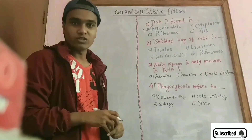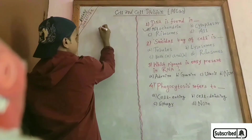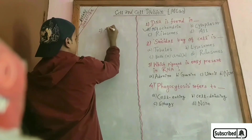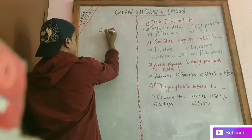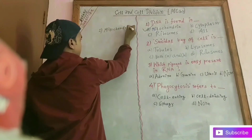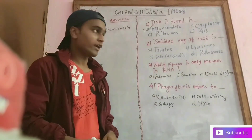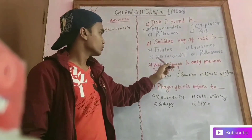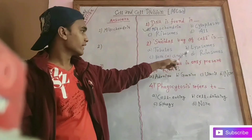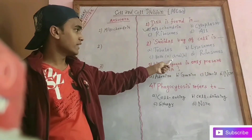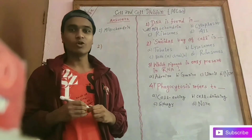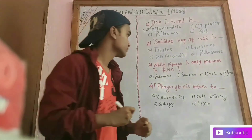Mitochondria is called the powerhouse of the cell. The suicidal bag of the cell is called the lysosome. Ribosomes are minute particles containing RNA. Therefore, lysosomes are called the suicidal bag of the cell because they contain digestive enzymes that can destroy cells.